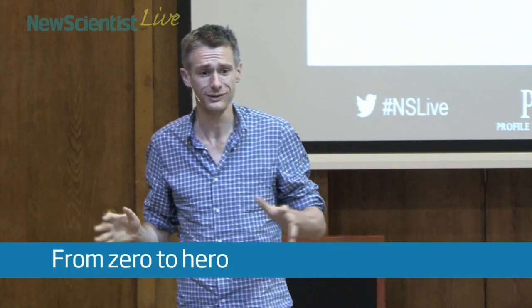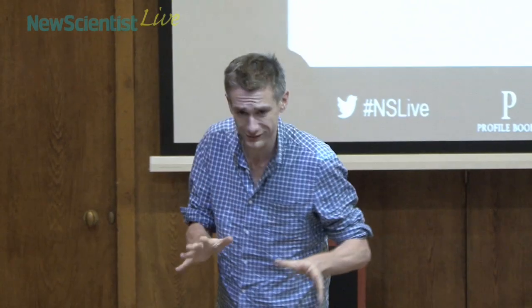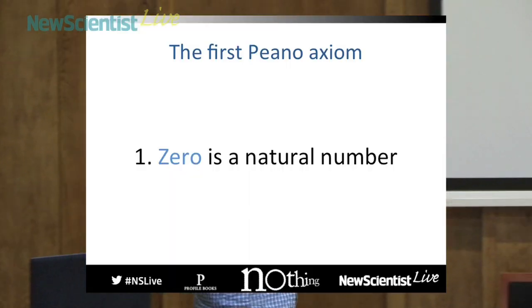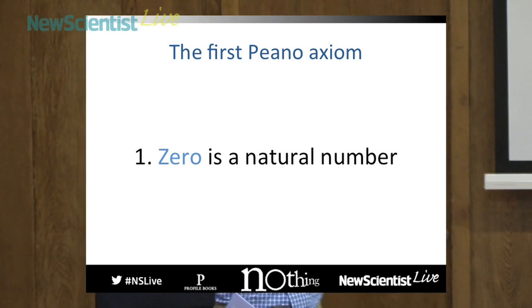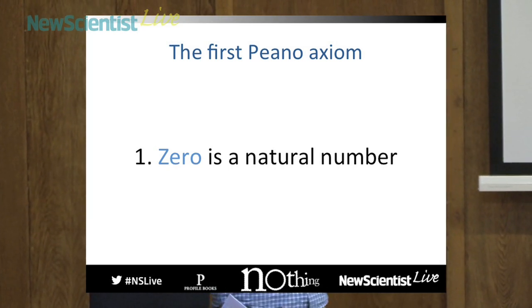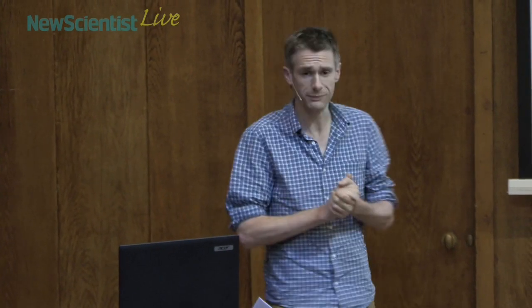Thank you, Jeremy, and good evening, everybody. I feel that, following Helen, I should start this talk with a disclaimer as well. This talk may also induce nausea, because this talk includes some maths. So there we have some maths. This is the first Peano axiom. The Peano axioms were devised in the late 19th century by the Italian mathematician Giuseppe Peano, and they are the basic logical rules that underlie the process of counting, of doing arithmetic.